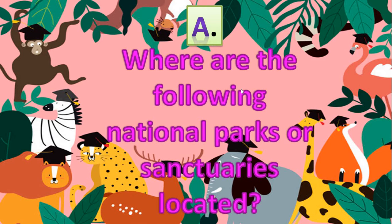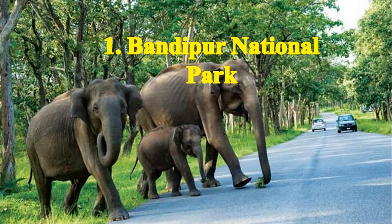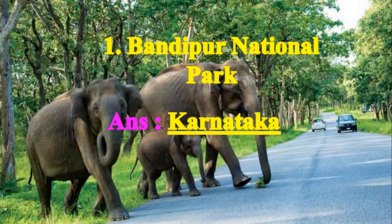Question A: Where are the following national parks or sanctuaries located? First is Bandipur National Park. Where is Bandipur National Park? Bandipur National Park is in Karnataka. Our first answer is Karnataka — write the spelling: K-A-R-N-A-T-A-K-A, Karnataka.